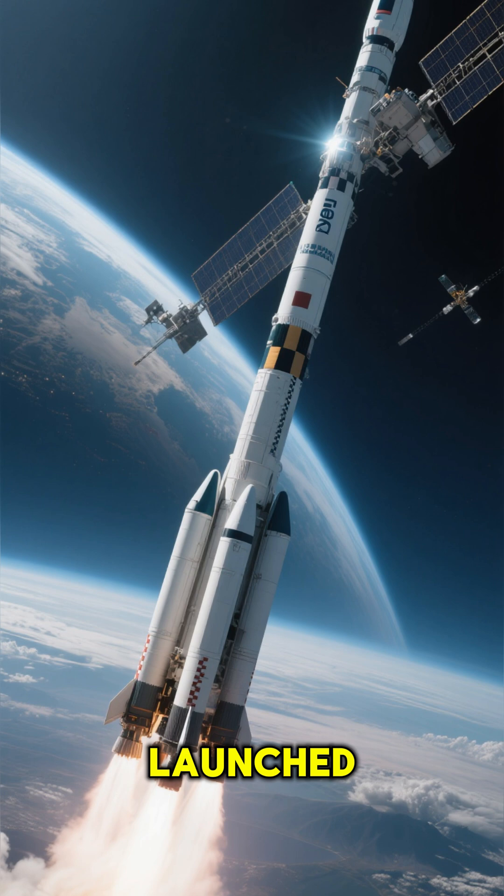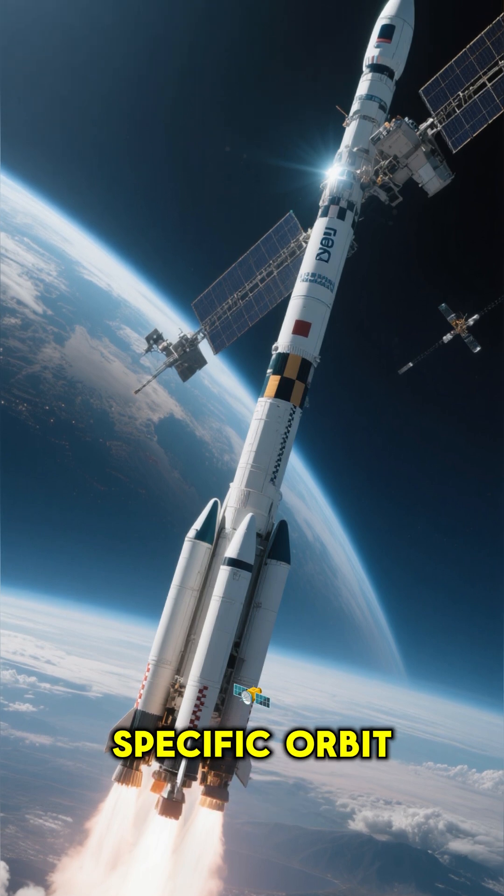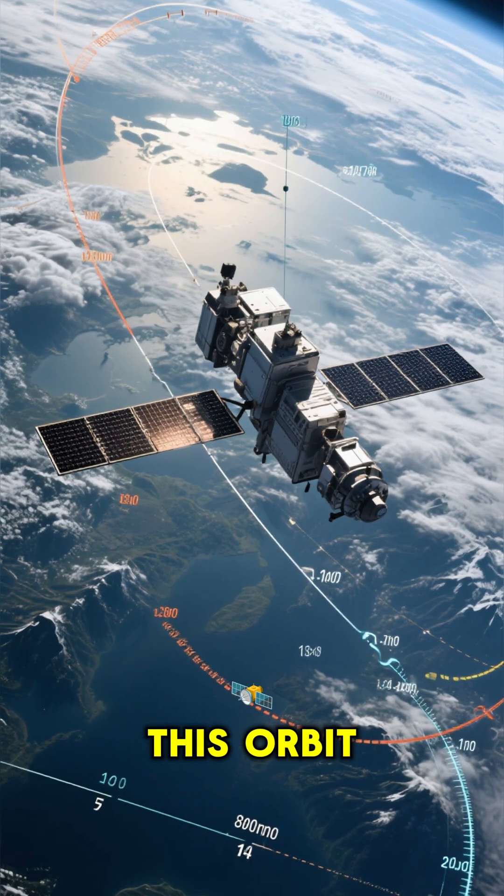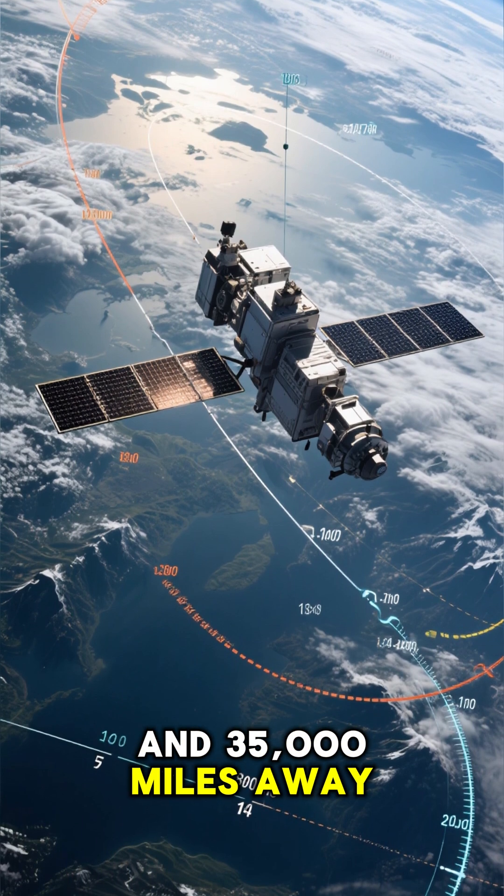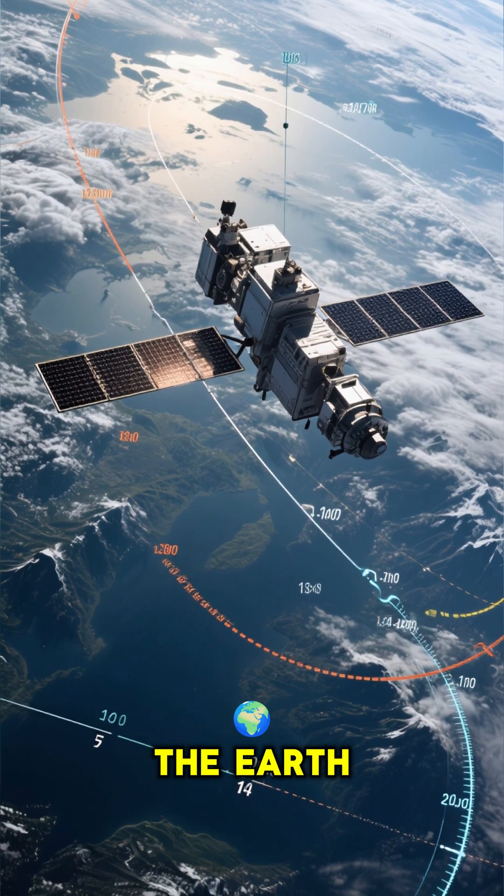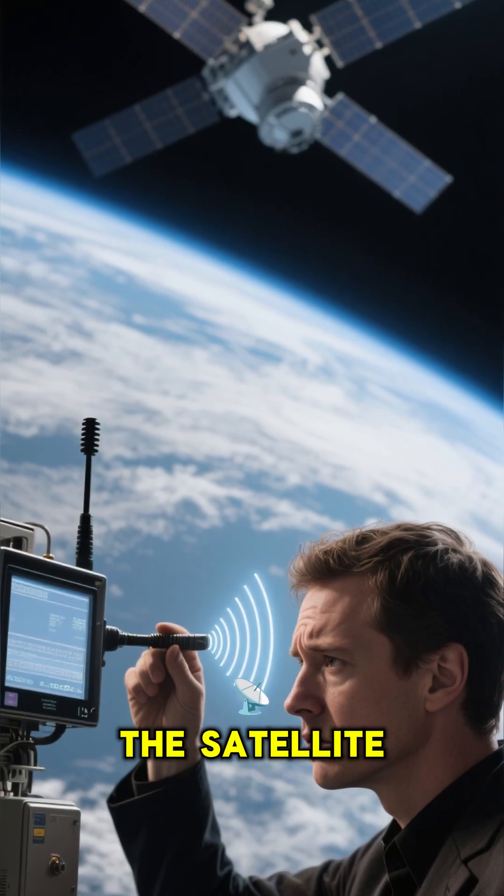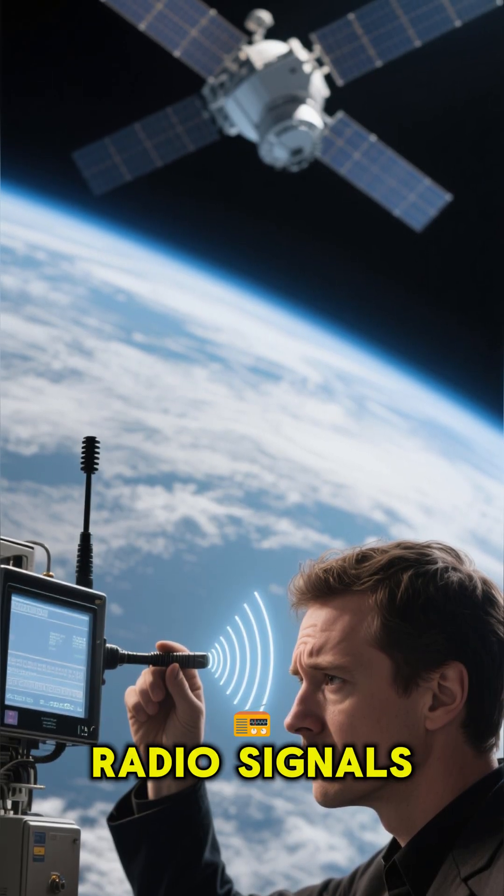When a satellite is launched, it's sent to a specific orbit around the Earth. This orbit is between 34,000 and 35,000 miles away from the surface of the Earth. At this distance, the satellite is beyond the range of our radio signals.